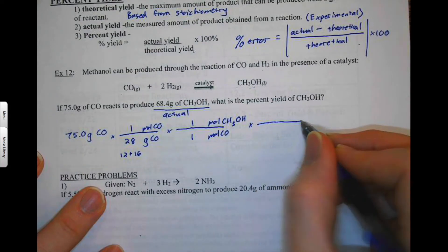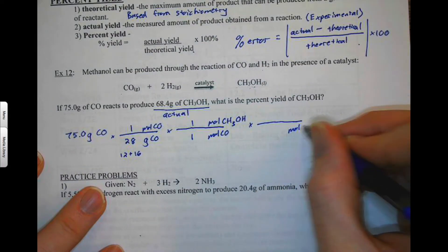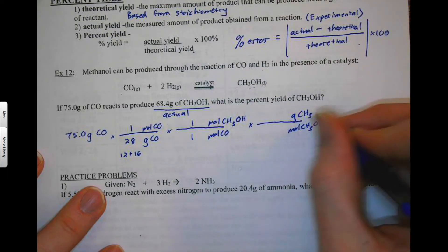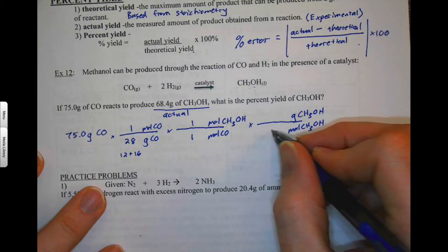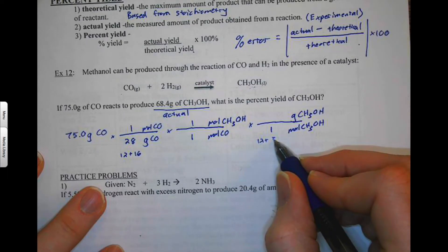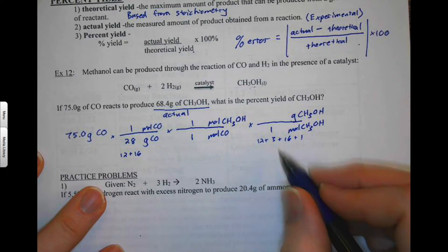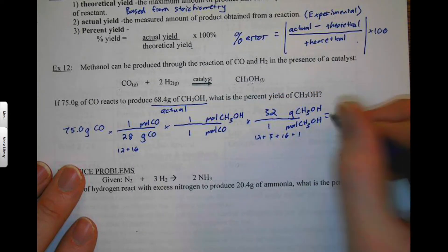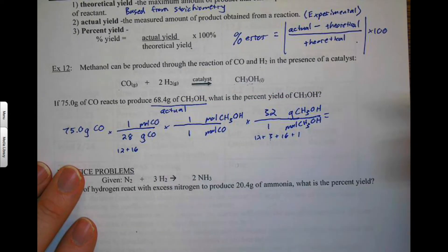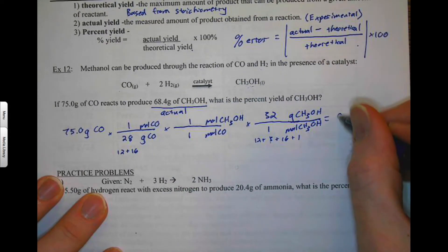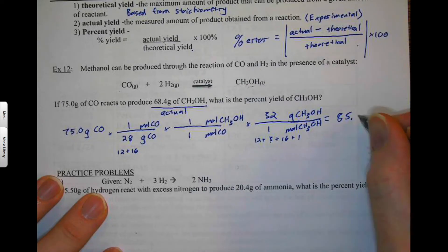And then we'll do one more. We'll change moles of methanol CH3OH into grams of methanol CH3OH. And so we need to go to the periodic table again. That's going to be 12 plus 3 plus 16 plus 1. That should be 3 times 1, but you guys know what I'm talking about. The molar mass for that is 32. If you hadn't figured out by now, you could Google molar masses very easily and they will tell you 85.7 grams.